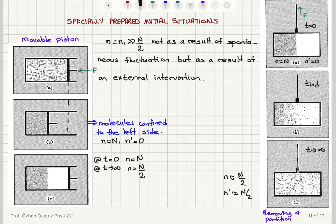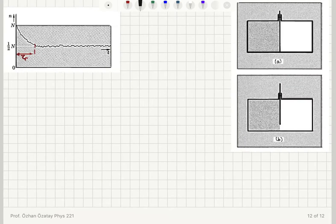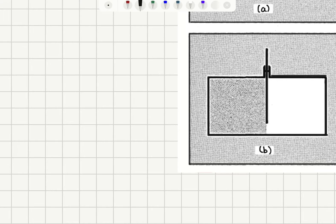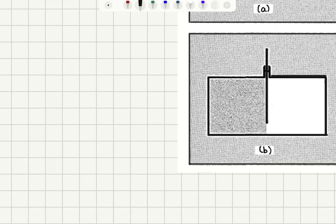Now, how long does it take for the system to relax to its most random or uniform configuration? Well, that depends on the details of the system. So if instead of removing the partition completely, I had removed only partially, what will happen is that still the molecules will start diffusing to the right-hand side, because many of the collisions between the molecules and the walls are restricted.